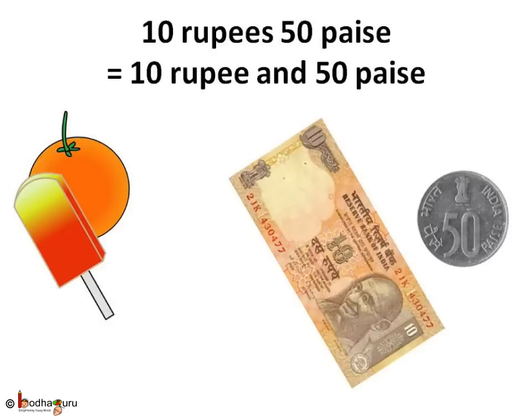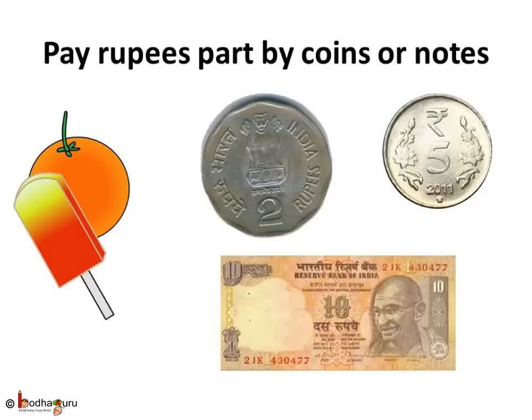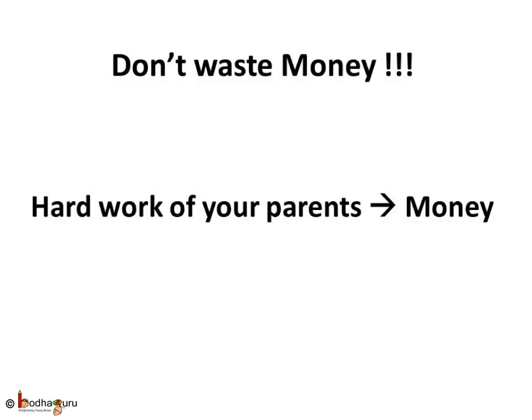So wherever you are buying something like toffee, ice cream, etc., keep the rupee parts and paise parts separate. 10 rupees 50 paise means 10 rupees and 50 paise. When we buy something, we pay the paise part by using coins like a 50 paise coin, 25 paise coin, etc. And we can pay the rupees part by using a coin or paper note like a 2 rupee coin, 5 rupee coin, 10 rupee note, etc. But remember one important thing — take care of the money and don't spend it unnecessarily. Money is very precious because it comes from the hard work of your parents day and night.